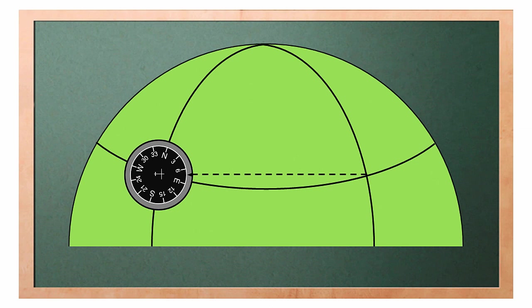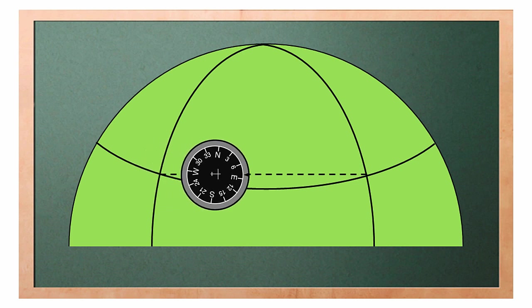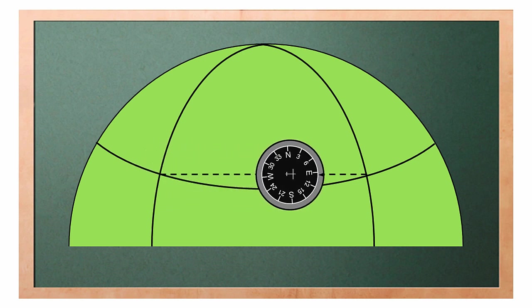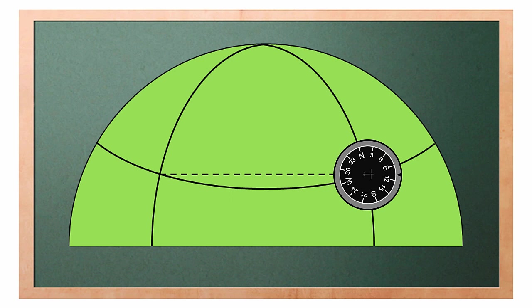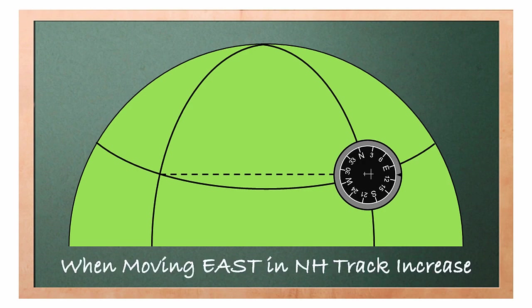In this scene we will investigate what will happen to our track when we travel from west to east. We start at approximately 070 and we end up at approximately 110. We can conclude that when moving east in the northern hemisphere, track increases.